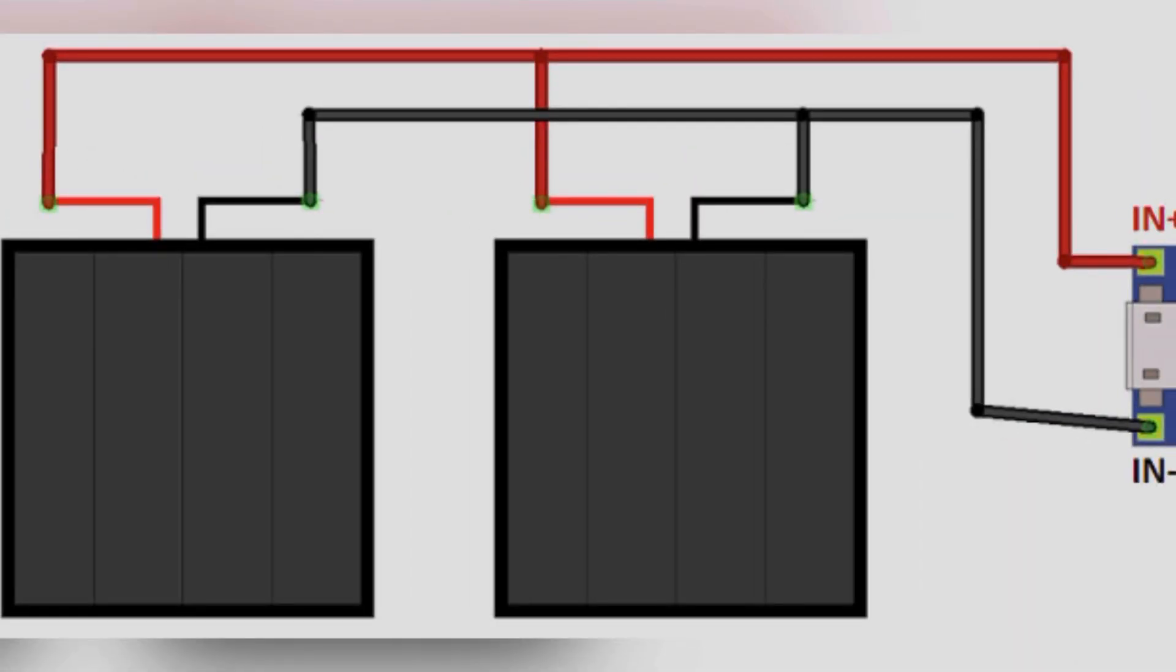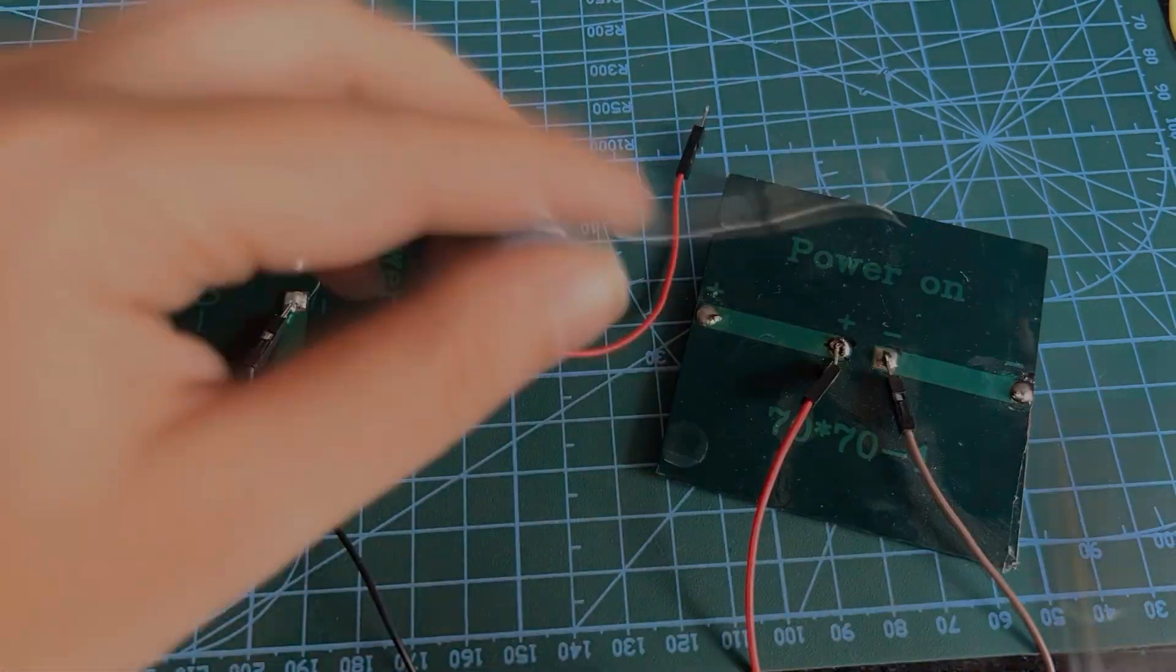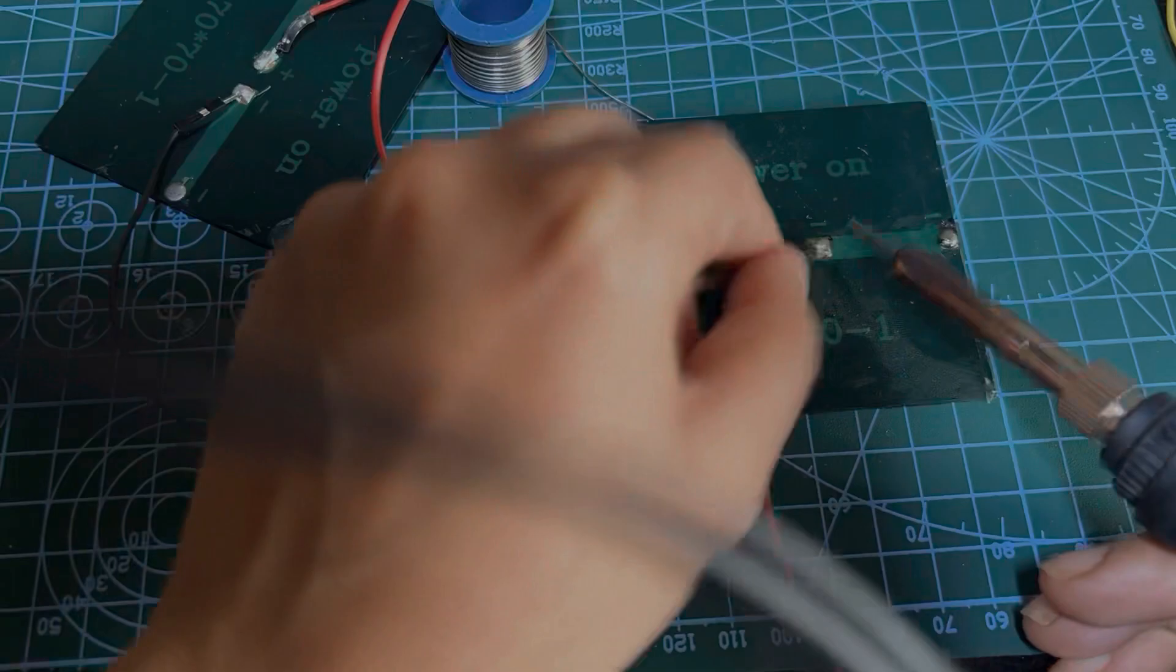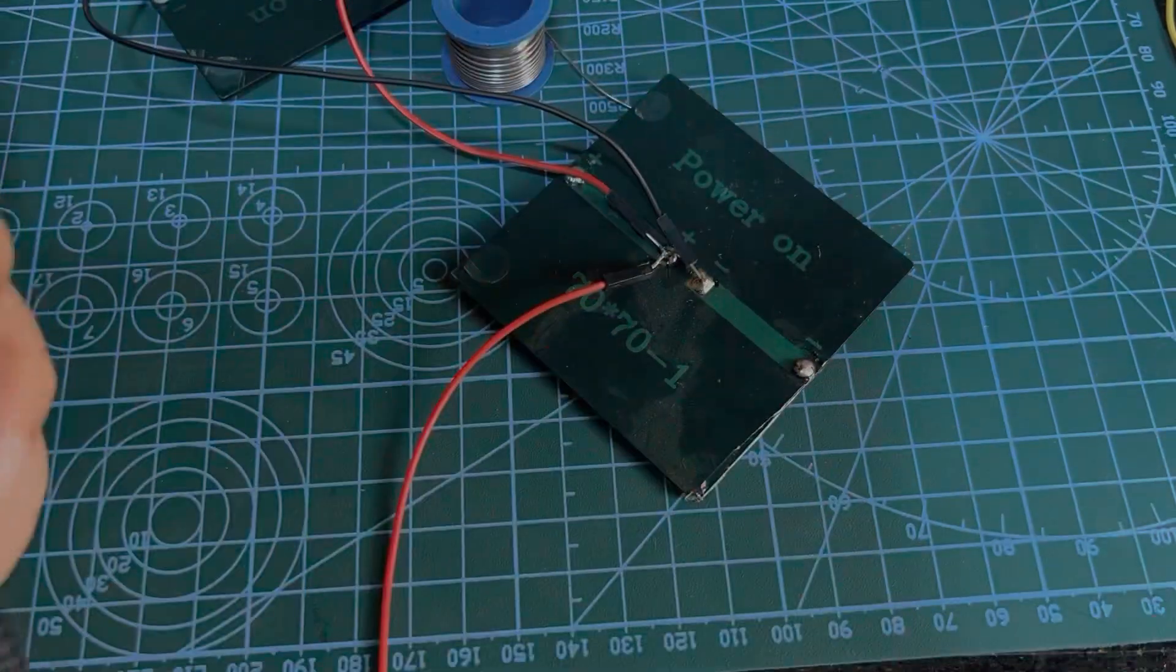In the first step, connect both solar panels in parallel so that the current is additive and the voltage remains the same. Follow the circuit diagram to connect both solar panels in parallel.